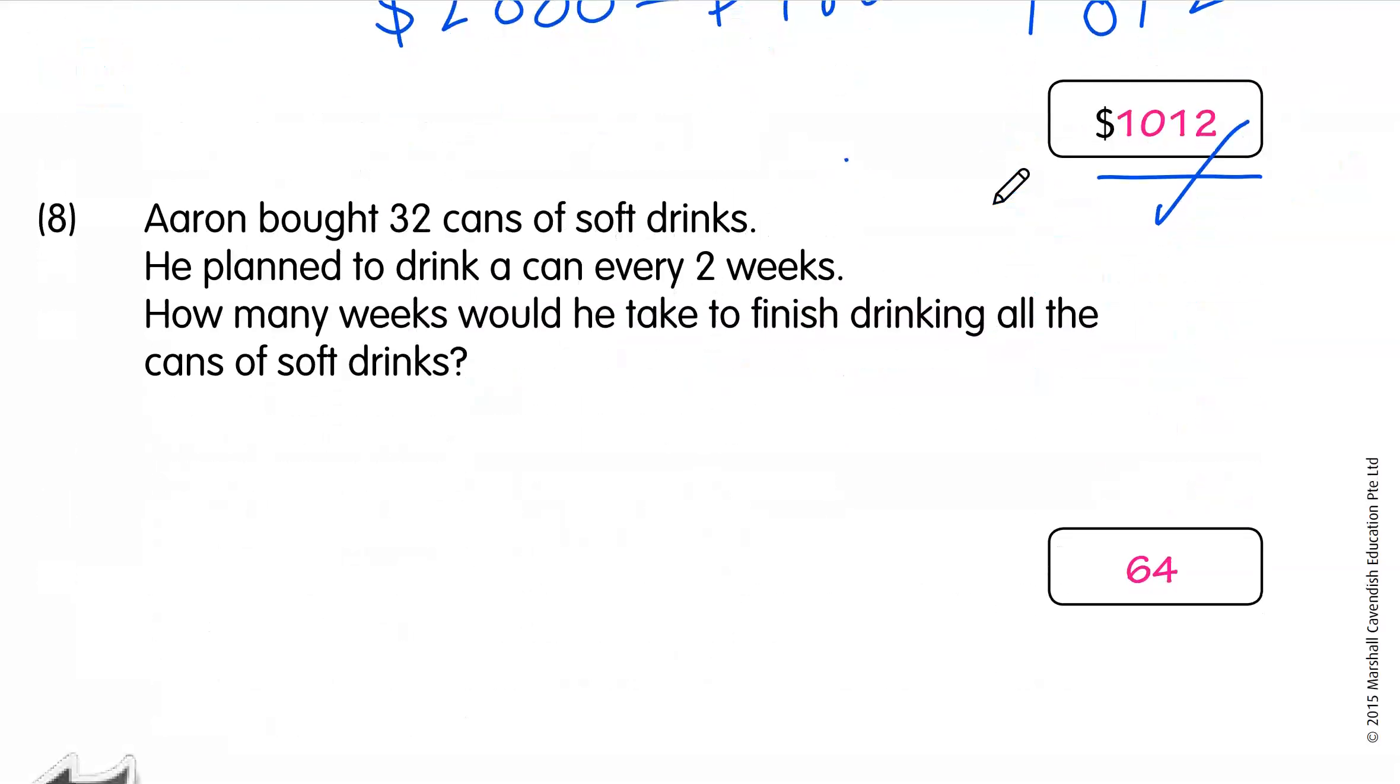Number 8. Aaron bought 32 cans of soft drink. He planned to drink a can every 2 weeks. How many weeks would he take to finish drinking all the cans of soft drink? Now be very careful, this got nothing to do with division. Every 2 weeks, there will be 1 can. Next 2 weeks there will be another can. So 4 weeks, 2 cans. All you have to do, take the 32 cans times every 2 weeks. By week 64, or when 64 weeks is finished, all the 32 cans will be consumed, drank, finished.